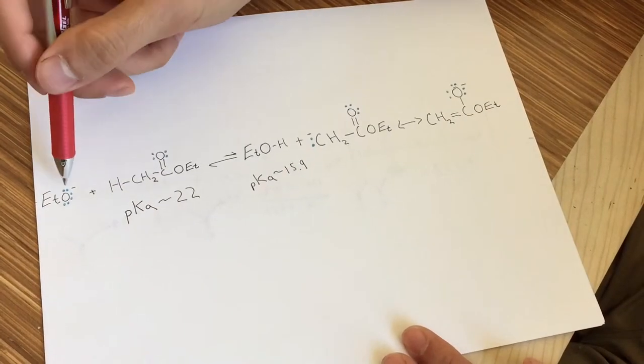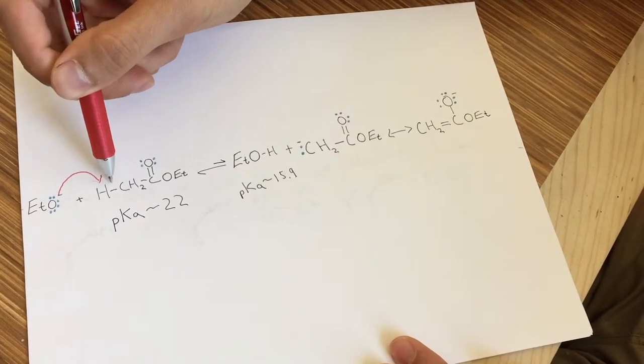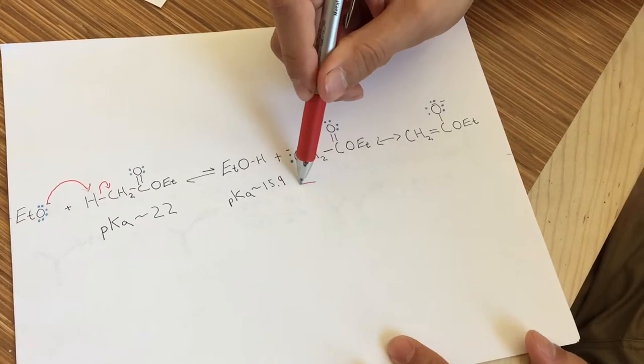In step 1, we have the removal of an alpha hydrogen by our base. This gives us our resonance-stabilized enolate anion.